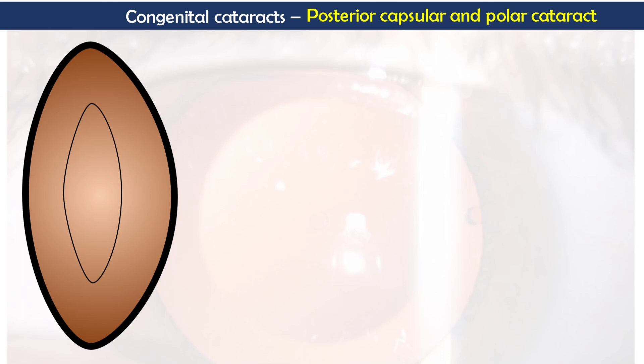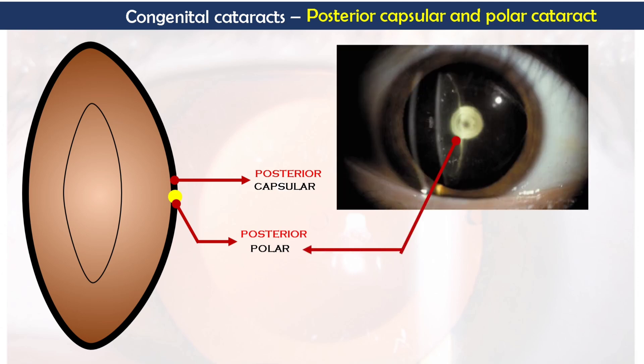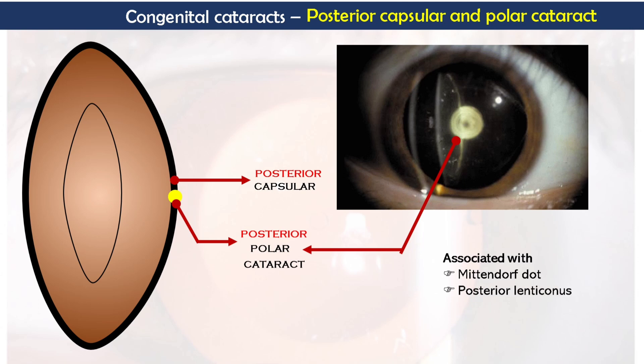Next is posterior capsular and polar cataract. The opacity is at the posterior pole and posterior capsule of the lens, and appears as an onion ring or whorl. It can be either stationary or progressive, and is associated with Mittendorf dot, which is a remnant of the persistent hyaloid artery, posterior lenticonus, and persistent hyperplastic primary vitreous.